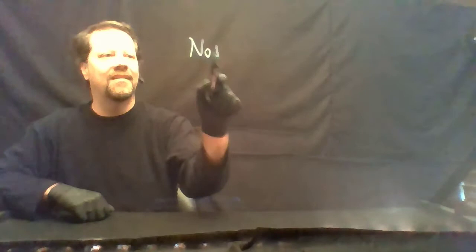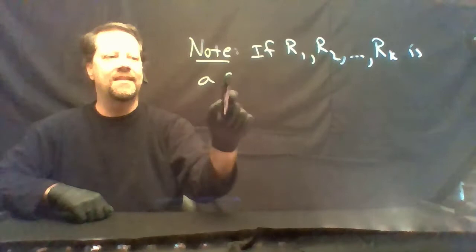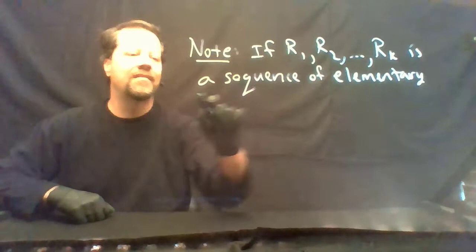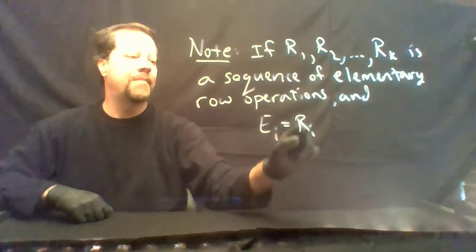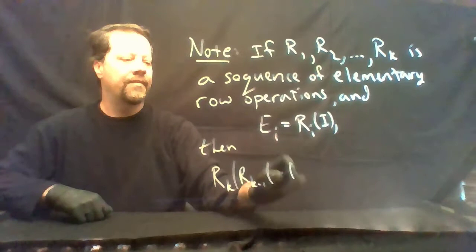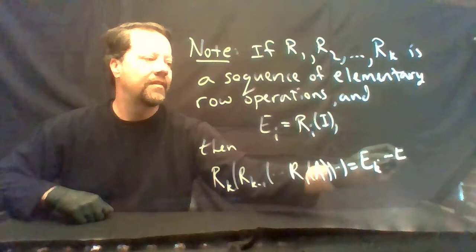Note: if R1, R2, through R_K is a sequence of elementary row operations, and E_i is R_i applied to the identity, then applying R_K, R_{K-1}, through R_1 onto a matrix A gives you E_K times E_1 applied to A.